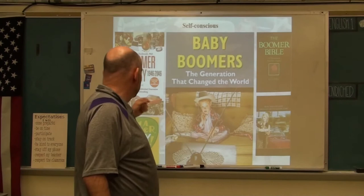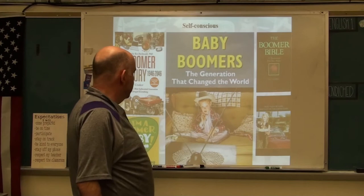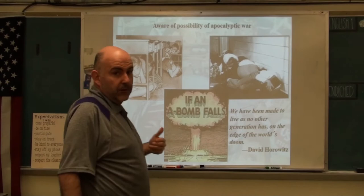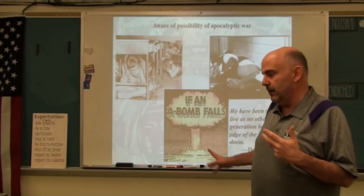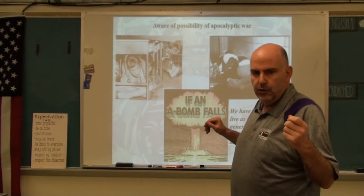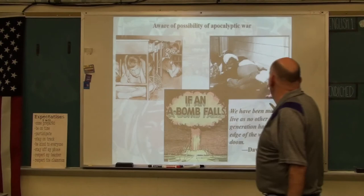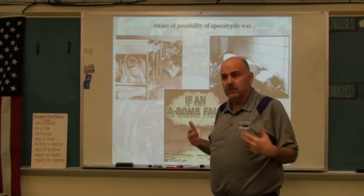Baby Boomers were a self-conscious generation. They thought they were going to control the world — there's a book called The Boomer Century; they thought it would last 1946 to 2046. But they were also afraid of apocalyptic war. If an A-bomb falls, what do you do? They told kids — like tornado drills — when there was a threat of a nuclear bomb in school, hide under your desk, get to the lowest level with your hand over your head. It's not going to do anything, but it provided some peace of mind that you could survive a nuclear war.